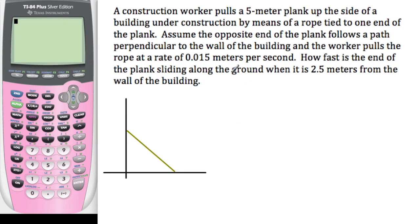So in this example we have a 5 meter plank that is being pulled up a building by a rope, and the rate that it's being pulled up is, let's see, it's pulled up at, so we'll call this dy over, we'll call this y. And this is x, which means it's being pulled up at dy/dt equals 0.015.